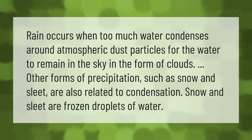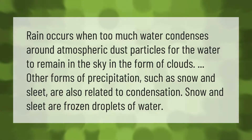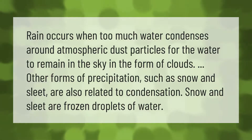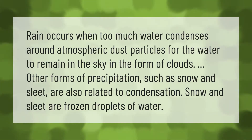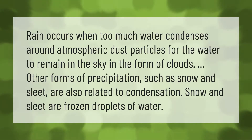Rain occurs when too much water condenses around atmospheric dust particles for the water to remain in the sky in the form of clouds. Other forms of precipitation such as snow and sleet are also related to condensation — snow and sleet are frozen droplets of water.